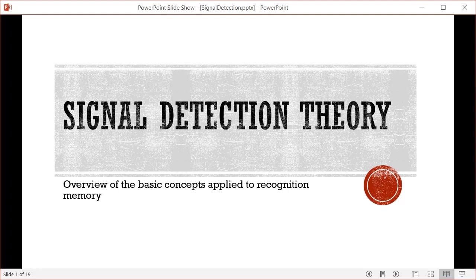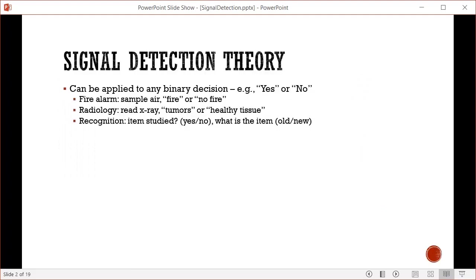In this video, I'm going to give you a description of signal detection theory, in particular as it is applied to recognition memory. I'm going to cover some of the basics and give you references to learn more. Signal detection theory can be applied to any binary decision, like fire alarms that sample the air to determine whether there's a fire or no fire, or radiology for reading x-rays to determine whether it's a tumor or healthy tissue.